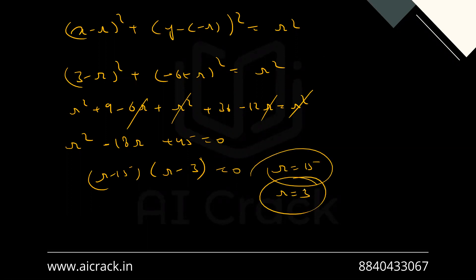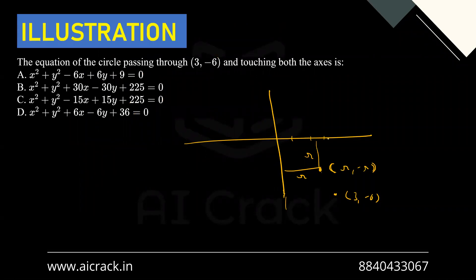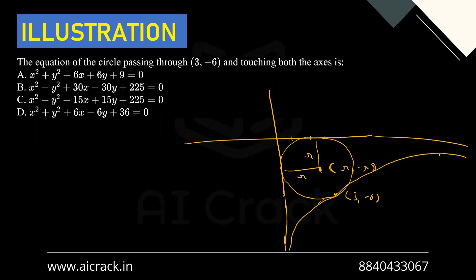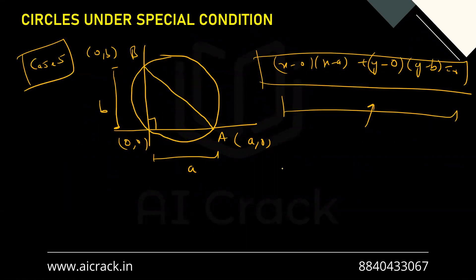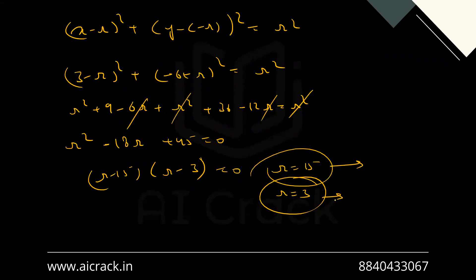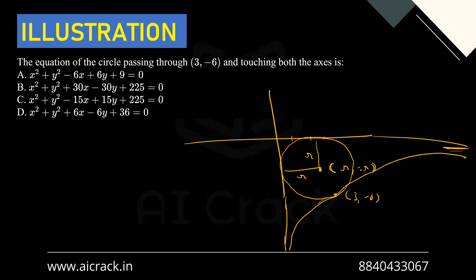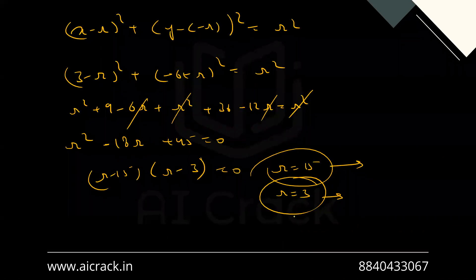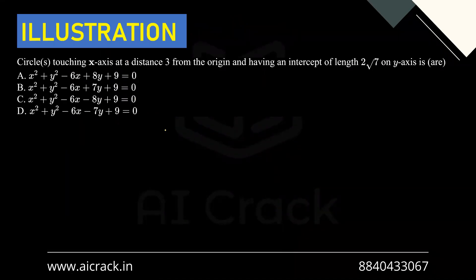Both values are valid geometrically — r = 3 gives a small circle and r = 15 gives a larger circle that also touches both axes and passes through (3, −6). You can plug each value of r into the circle equation to get the two answers and match with the options.